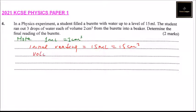We say volume dropped is equals to 3 drops, and each drop was 2 cm³. This gives us 6 cm³.